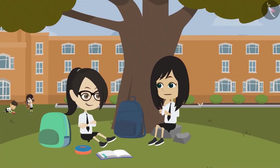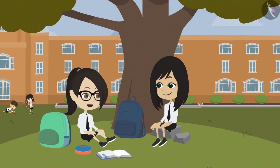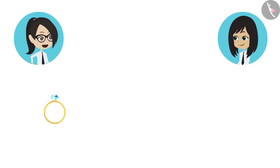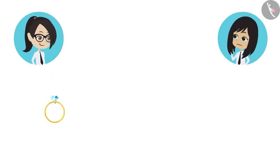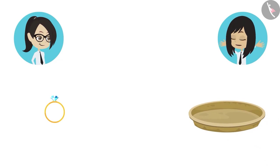Now I understand. What other objects can we use to make a round figure? A ring is also round. The ring will make a very small round figure. To make a big round figure, we can use a plate.